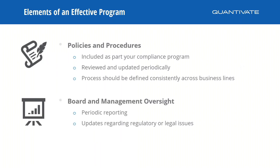Monitoring and audit is critically important — document and track all complaints and make sure your complaint management program is part of your audit process. Periodic training for staff ensures everyone is doing things consistently. Finally, effective change management means considering organizational changes that may impact your program. For policies and procedures specifically: they need to be part of your compliance management system, reviewed and updated periodically — best practice is annually — and your process should be defined and consistent across all business lines.